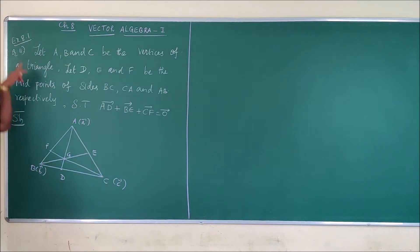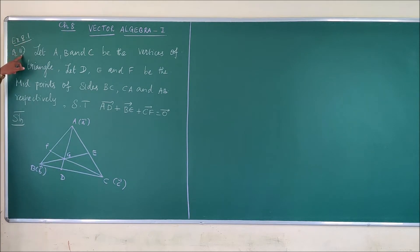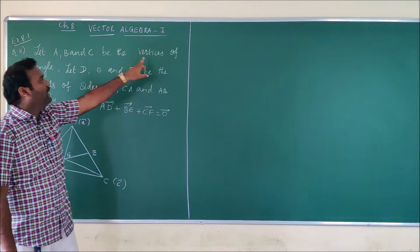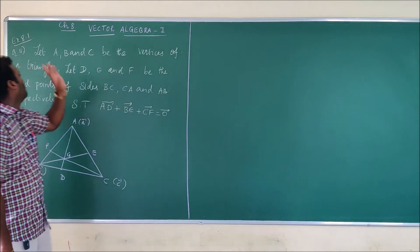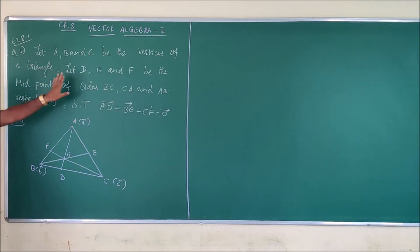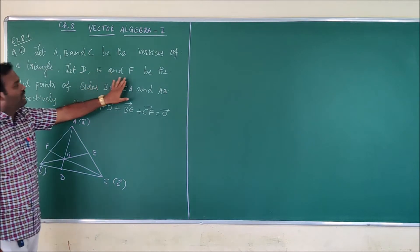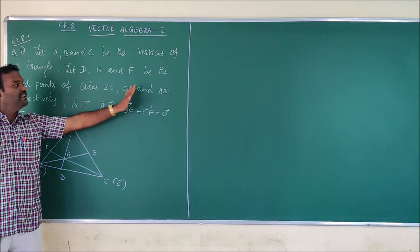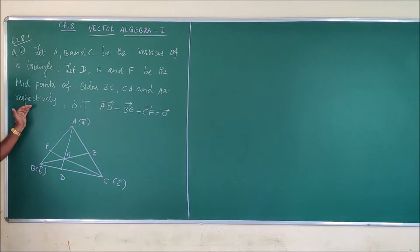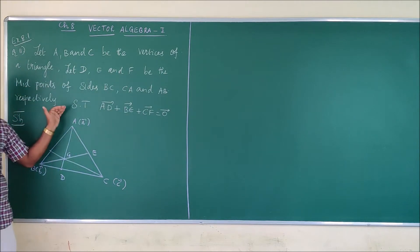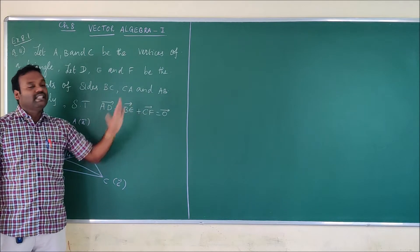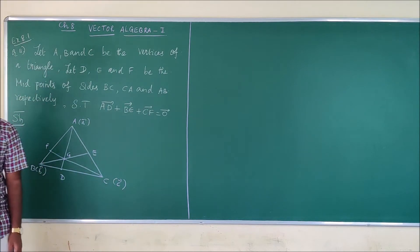Next step, we are going to see Exercise 8.1, 11th problem. Let A, B and C be the vertices of a triangle. Let D, E and F be the midpoints of the sides BC, CA and AB respectively. We need to show that AD vector plus BE vector plus CF vector equals the zero vector.